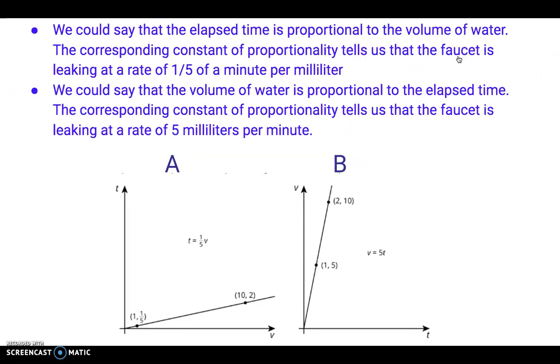A description of graph A would be we could say that the elapsed time is proportional to the volume of water. The corresponding constant of proportionality tells us that the faucet is leaking at a rate of one-fifth of a minute per milliliter.